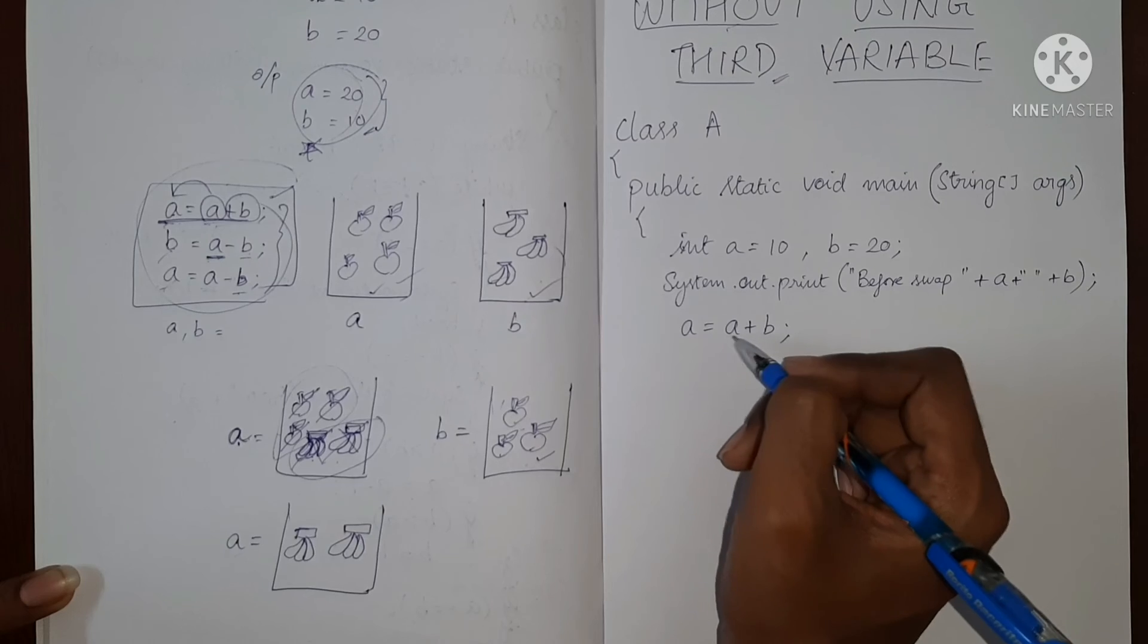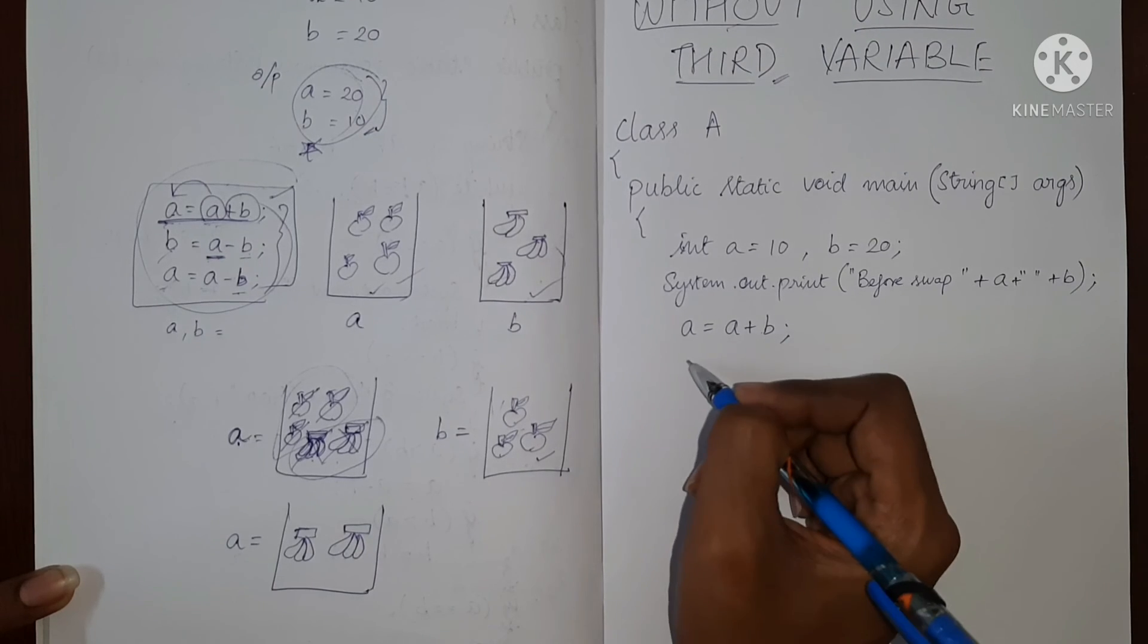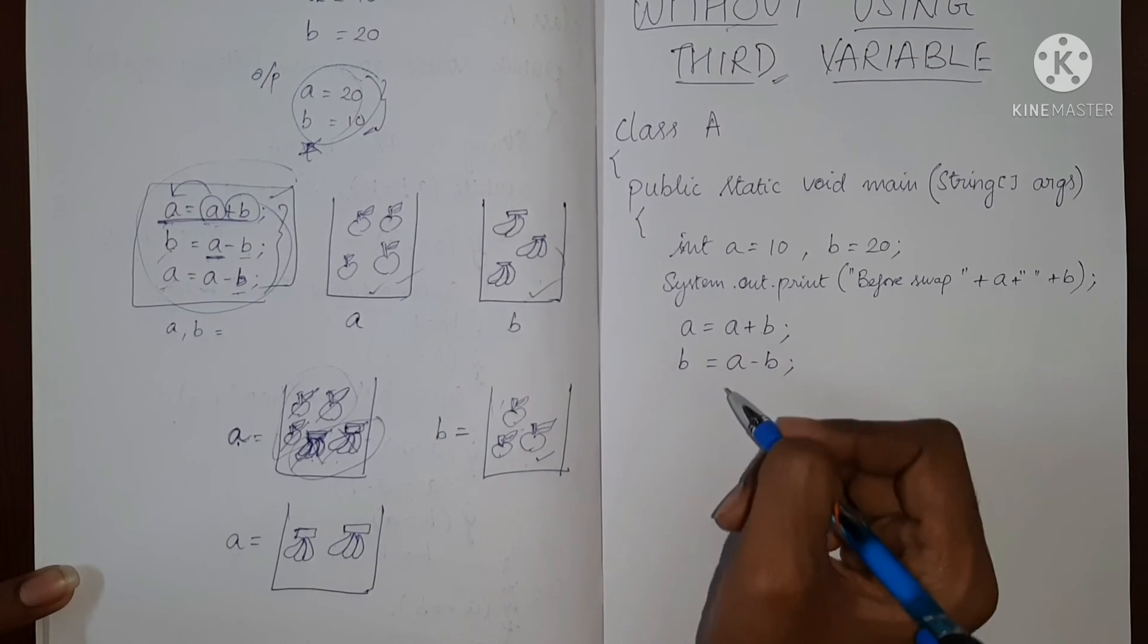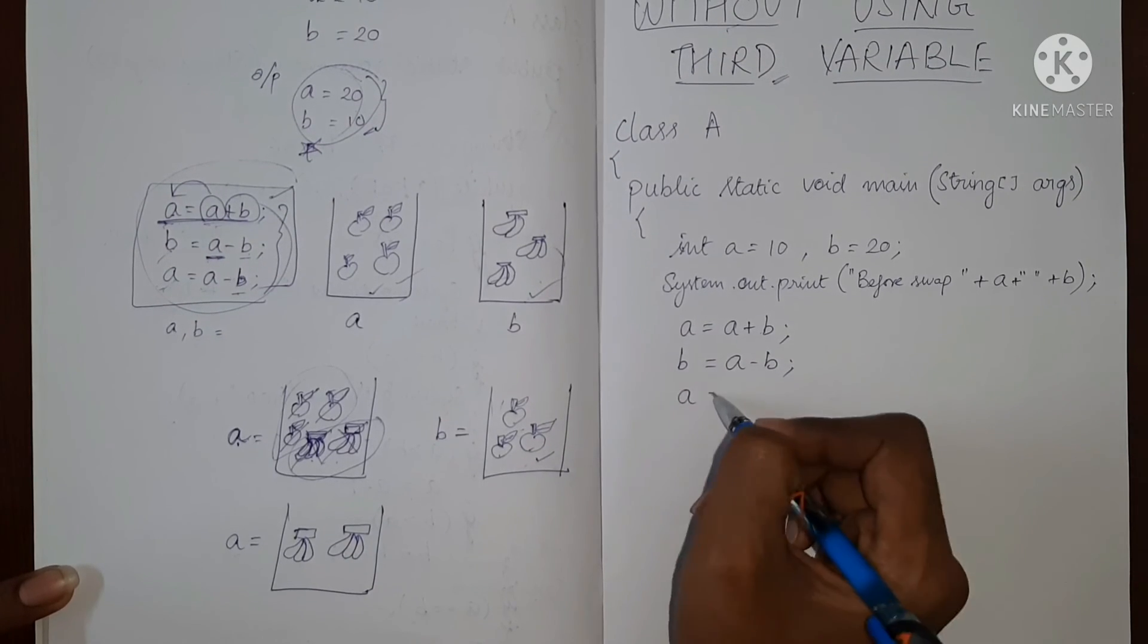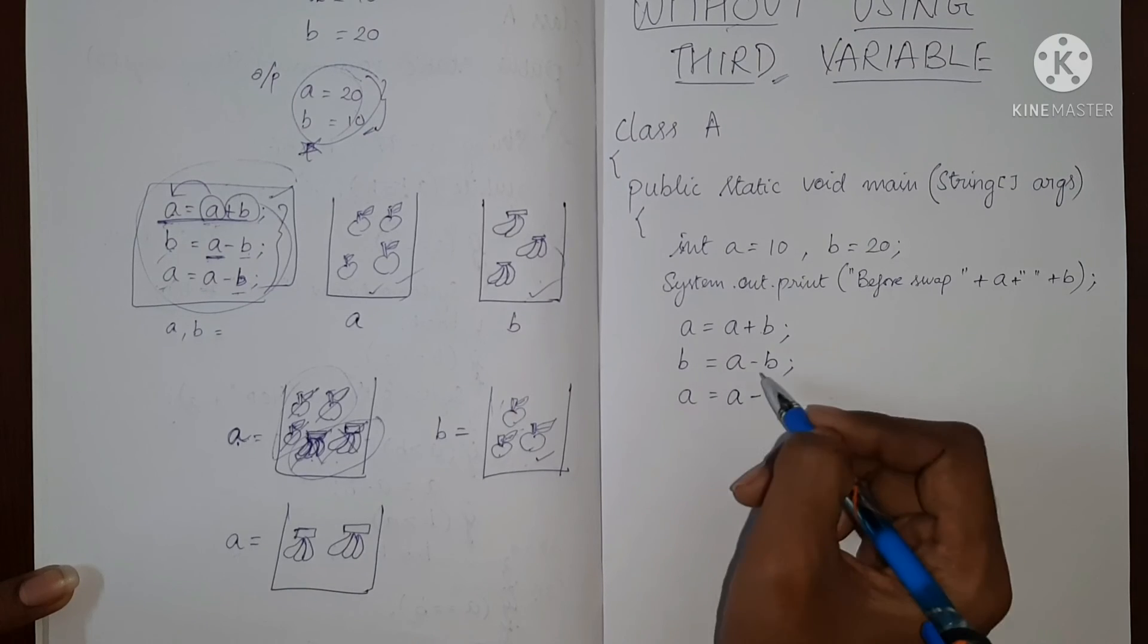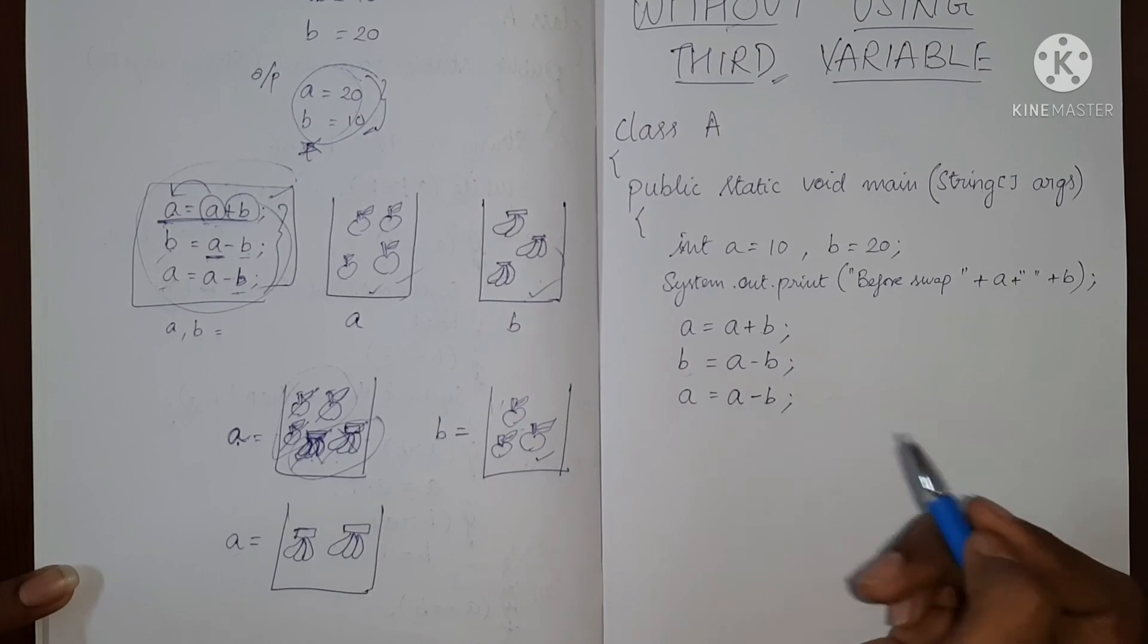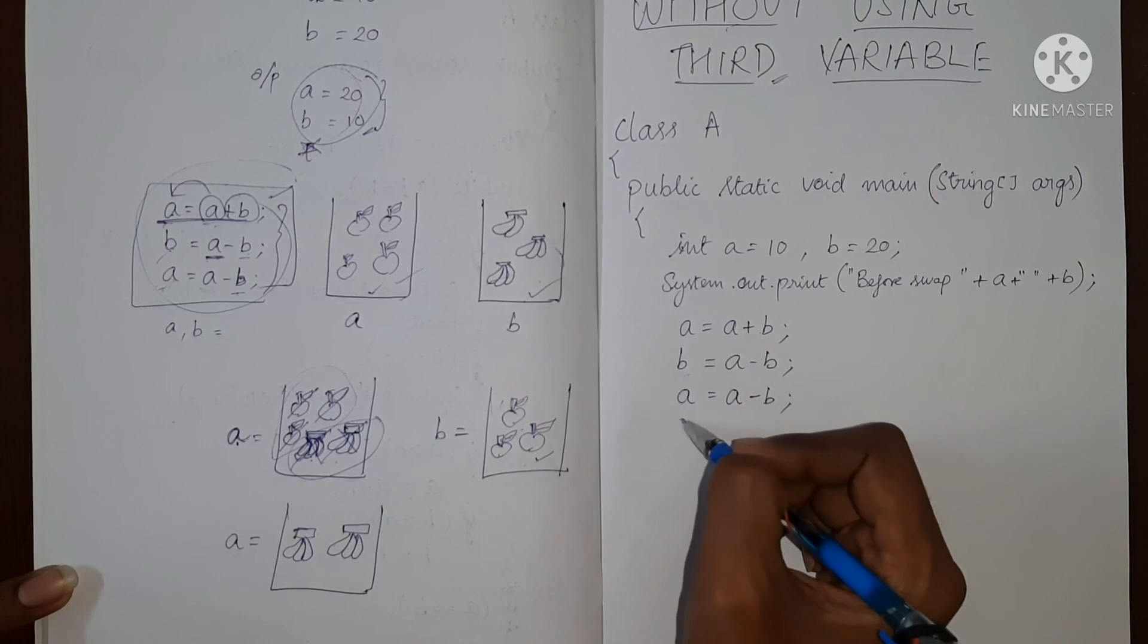We are creating a mixture of a and b. From that mixture, we will remove b and store it in b. From the same mixture, we will remove the new b and store it in a. So now let's print the new values.